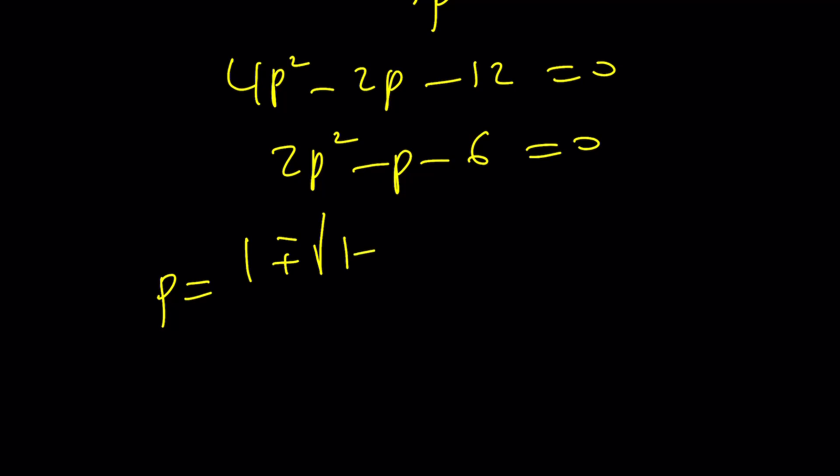We got the 7 again divided by 4. This is 7. 1 plus minus 1 plus 7 over 4. 1 minus 7 over 4. That's 2. That is negative 3 halves. These are products.